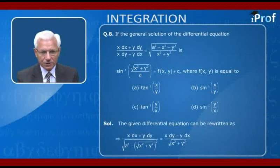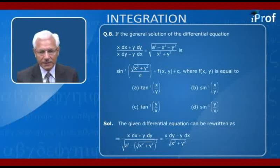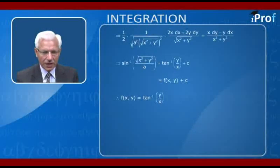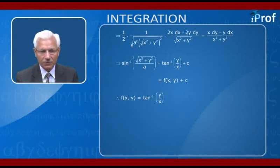The given differential equation is rewritten as (x dx + y dy)/√(a² − (x²+y²)) = (x dy − y dx)/√(x²+y²). This is further rewritten as (1/2) · 1/√(a² − (x²+y²)²) · (2x dx + 2y dy)/√(x²+y²) = (x dy − y dx)/(x² + y²).